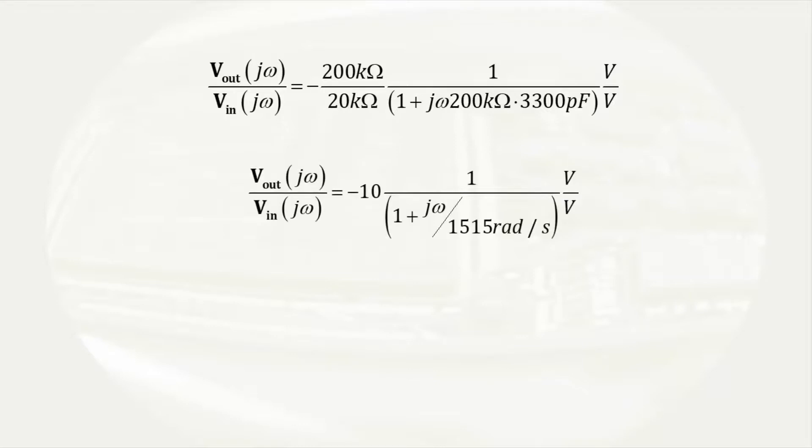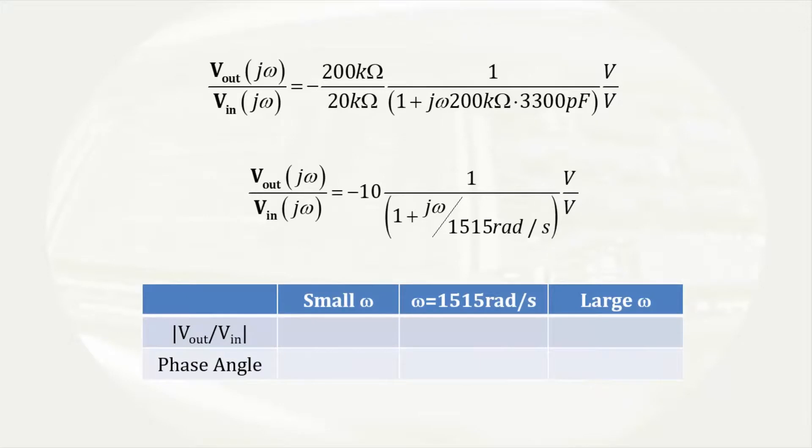The behavior of the transfer function can be summarized by looking at how the output versus the input varies with angular frequency. For small values of omega, the denominator is essentially 1 and the magnitude of the output over the input signal is 10 volts per volt. There is a negative sign in front of the function and the imaginary portion is not significant yet, so we have a phase shift of 180 degrees.